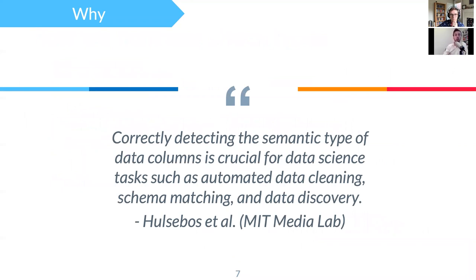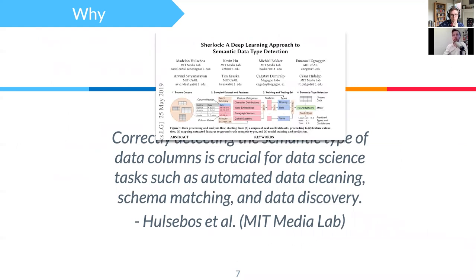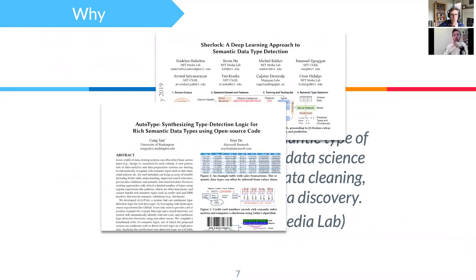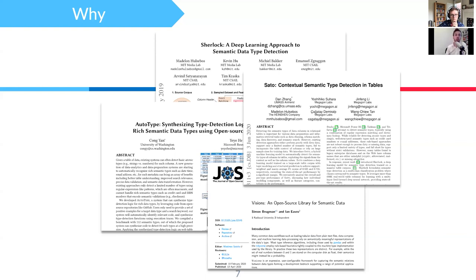Another reason we're doing it is because we've noticed, but also others have noticed, the importance of this semantic detection. For example, Hulsebos et al. say that the detection of semantic types is crucial for data science tasks such as automatic data cleaning. And they're shared by many. So this is from MIT, but there's also Microsoft, UMass, and Wes McKinney also mentioned this in documentation of need for Pandas 2.0.